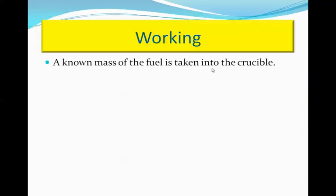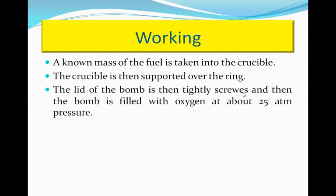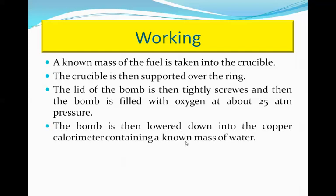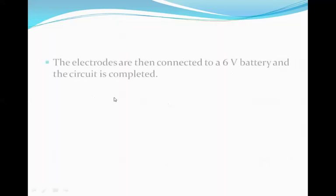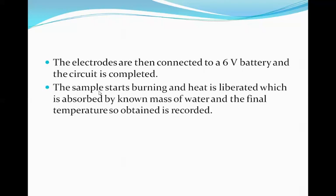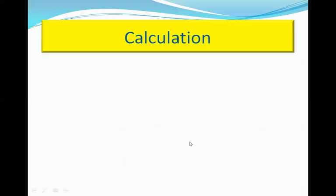Working procedure: a known mass of fuel is taken into the crucible. The crucible is supported over the ring. The lid of the bomb is then tightly screwed, and the bomb is filled with oxygen at about 25 atmospheric pressure. The bomb is then lowered into the copper calorimeter containing a known mass of water. The electrically operated stirrer is switched on and the initial temperature of the water is noted. The electrodes are connected to a 6-volt battery and the circuit is completed. As soon as the circuit is completed, ignition takes place, the sample starts burning, heat is liberated and absorbed by the known mass of water, and the final temperature is then recorded.